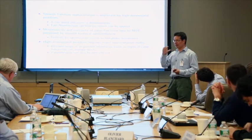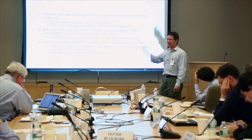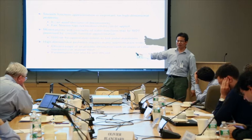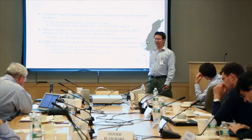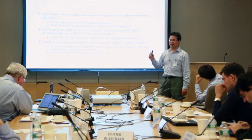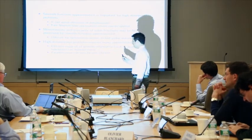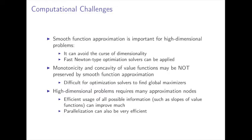We can also speed up a lot if we use slope information efficiently. When we compute at each node XI, we get VI — which is the level information. But we can also easily get the slope information. Using this slope information can make the algorithm very fast.